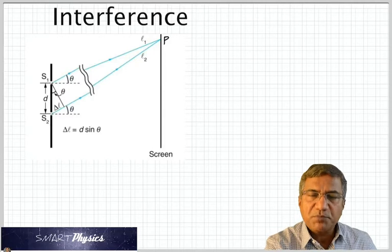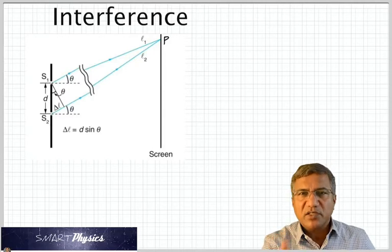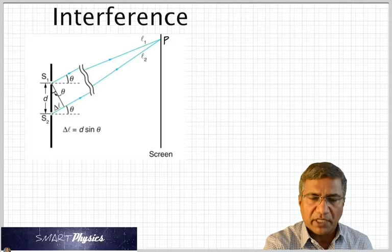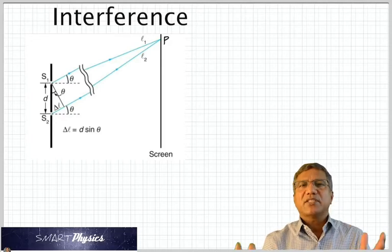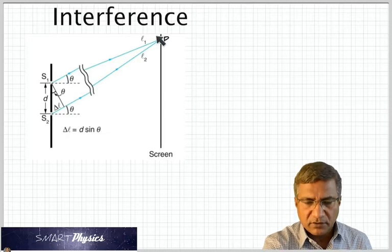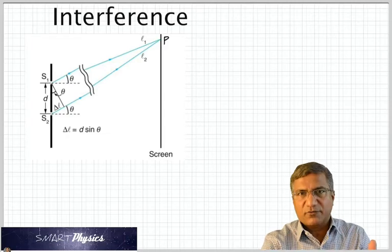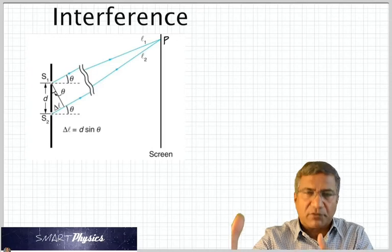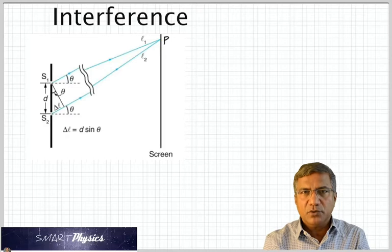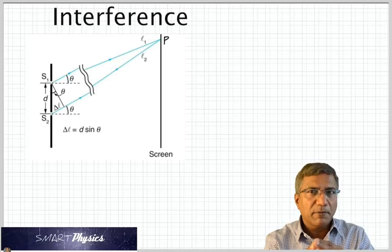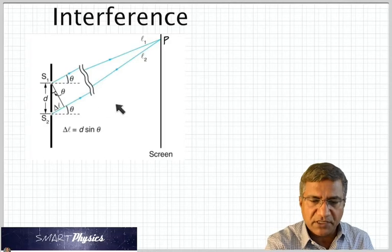So the path difference is D sin theta. And if this path difference is an integral multiple of lambda, then you get brightness. Why integral multiple of lambda? Because if you have a crest from S1 superimposed on the next crest from S2, because you can't have the same crest because the paths are not equal.